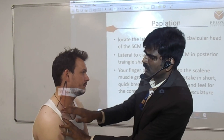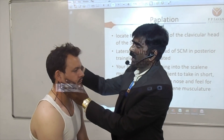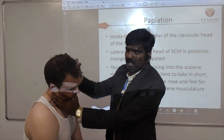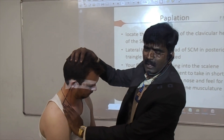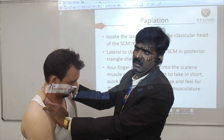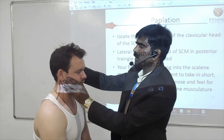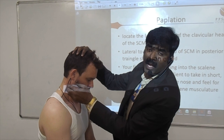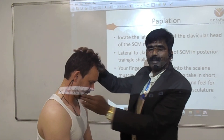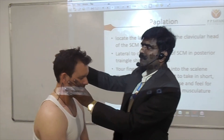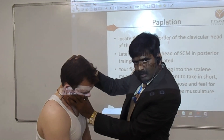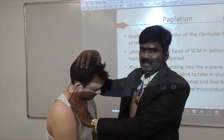To palpate the distal portion attached to the ribs: flex the neck and slightly lateral flex the neck — now the complete sternocleidomastoid is relaxed. Place your hand just above the clavicle and ask the patient to take a deep inspiration. You can then palpate the distal portion of the scalene muscle. The key difference: for the proximal portion, flex the neck only and place your hand behind the sternocleidomastoid; for the distal portion, flex and lateral flex the neck, then place your fingers just above the clavicle.